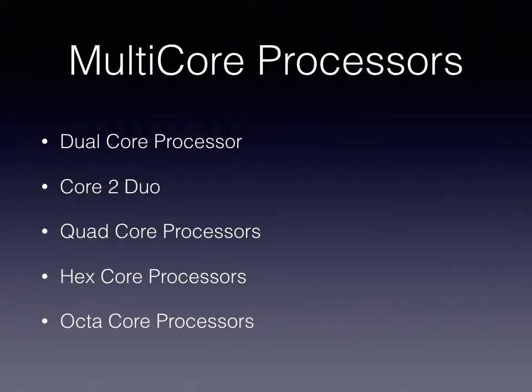Regarding multi-core processors, different types of processors came into the market, like dual core or core to duo. There are also quad core processors having four cores, hex core processors having six cores, and octa core consisting of eight different processors. By increasing the number of processor cores, it is observed that while speed decreases, there is greater efficiency in battery life, which we will see in the next slide.